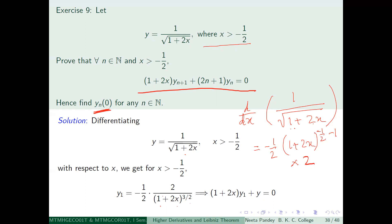The first derivative gives minus 1/2 times 2 divided by (1+2x)^(3/2). The 2s cancel, giving y₁ = minus 1/(1+2x)^(3/2). We can write this as minus y divided by (1+2x). So the equation becomes (1+2x)·y₁ + y = 0. This is the differential equation.